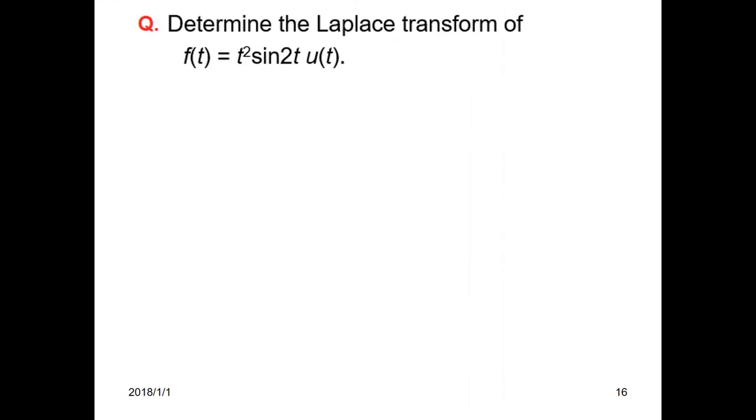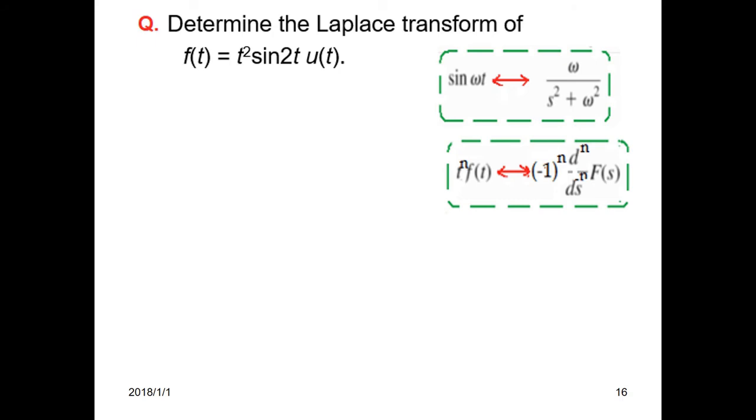Another one: we have to find the Laplace transform of t squared sin(2t) u(t). Now this is the formula for sine function: sine omega t is given by omega divided by s squared plus omega squared. So we'll use this, and then since it is multiplication by t squared, we'll also use this formula: t raised to the power n f(t) is minus 1 to the power n, d raised to the power n over ds to the power n of F(s).